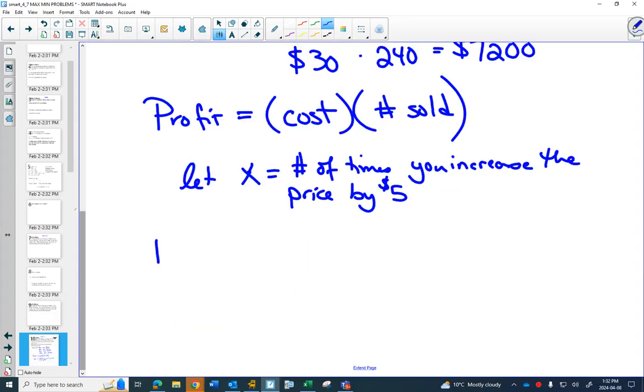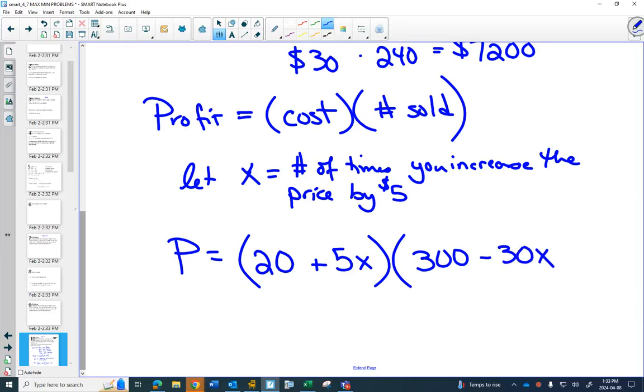And now I'm going to take my words and try to put it into algebra. We don't like, how about P for profit? Now, the cost started at $20. And then you could add $5 as many times as you wanted. So if x is 0, then my cost would be just $20. If x is 1, I'd get my $25. Now, the number sold. We start off with $20 selling 300. And what happens every time we increase the price by $5? We have to subtract 30 people every time we do that.